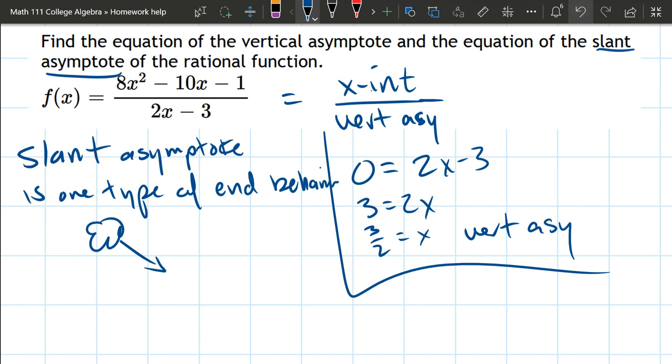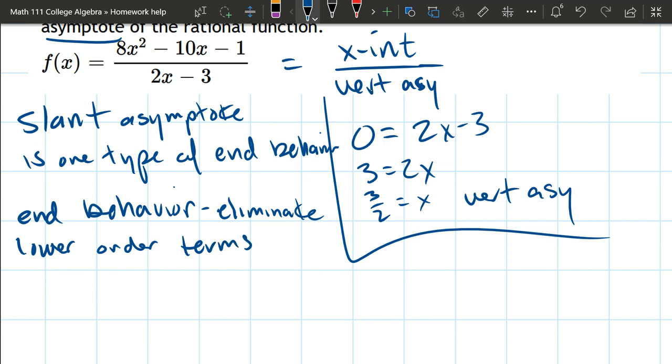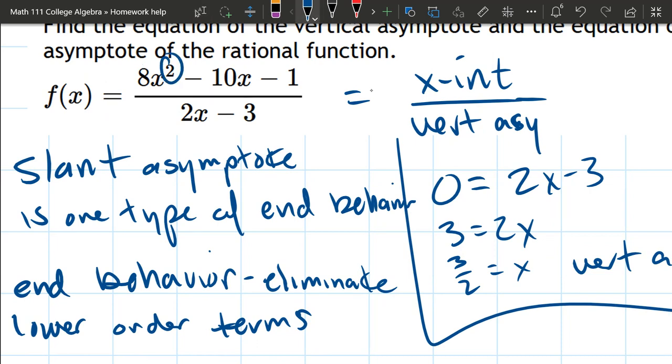It's our job to figure out which one of these it is. So let's go ahead and do what we always do for end behavior. We're going to keep the highest order terms. So we're going to eliminate lower order terms. And you're going to get a line whenever the power in the numerator, the square, is one higher than the power in the denominator, which for us is a first power.